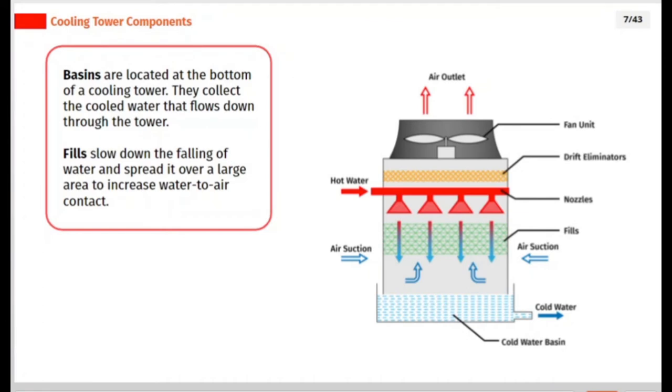Basins are located at the bottom of a cooling tower. They collect the cooled water that flows down through the tower. Fills slow down the falling of water and spread it over a large area to increase water to air contact.